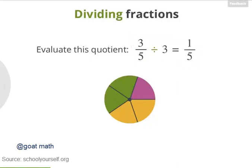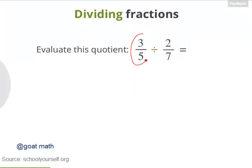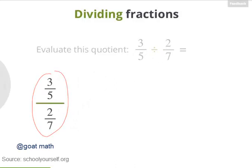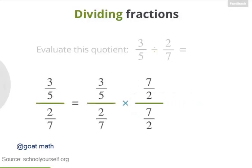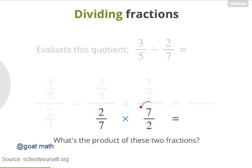Now what happens if you divide one fraction by another fraction? For example, what's 3 fifths divided by 2 sevenths? Well, first, let's rewrite the division like this. You can think of this as another fraction, with a fraction in the numerator and in the denominator. This is still 3 fifths divided by 2 sevenths. Now this is equal to 3 fifths divided by 2 sevenths times 1, because multiplying by 1 does not change the value of an expression. And here's another way to write 1: 7 halves divided by itself, because any number divided by itself gives you 1.